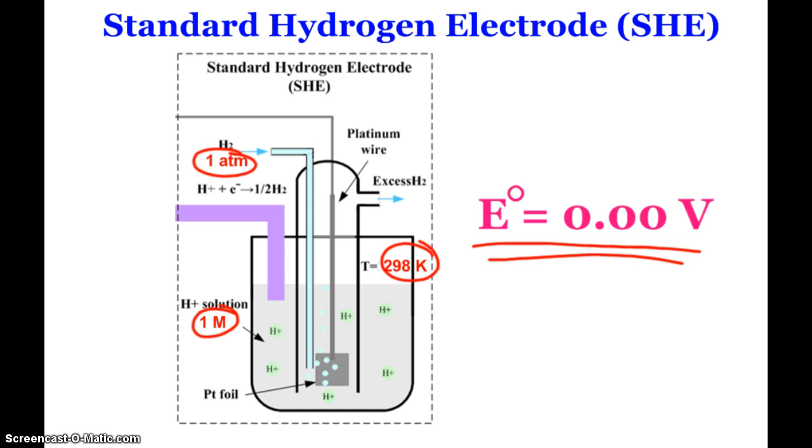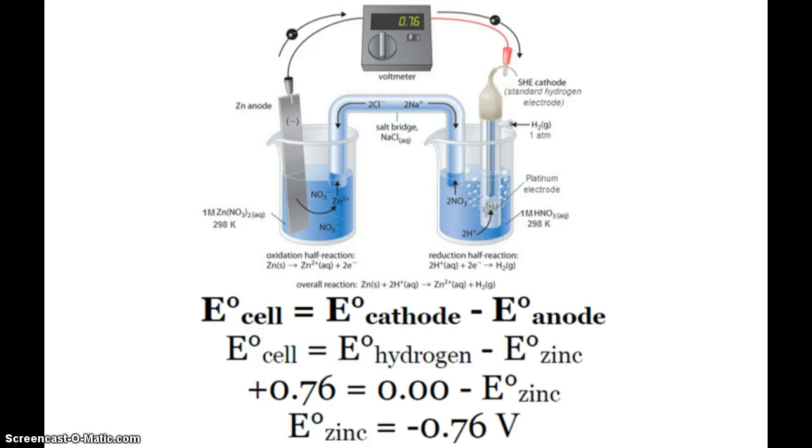Then, no matter what you hook up to it, you can figure out what the potential is of the cell that you hook up to it. For example, where did that negative 0.76 volts come for our zinc reaction? Here you see that the zinc anode is attached to the standard hydrogen electrode, which is going to be the cathode here. When you hook it up and run it, you see that the voltmeter gave us 0.76 volts. Since we know that the value of our hydrogen is 0 because we set it there, then that leaves no choice but for the E0 of the zinc to be negative 0.76 volts.